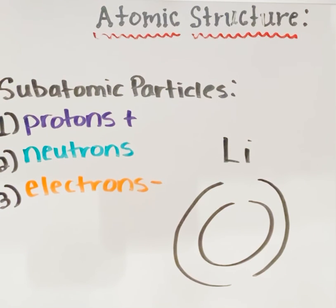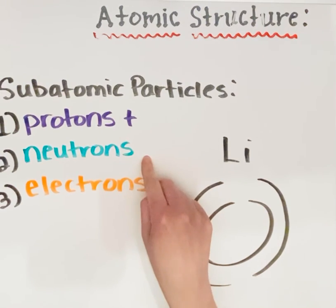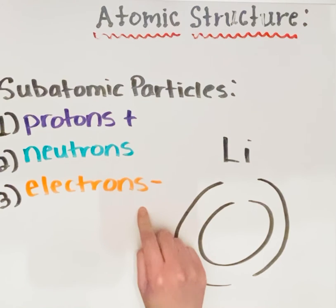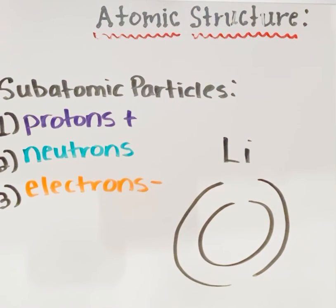We're going to talk about three different types of subatomic particles today, including protons, neutrons, and electrons. Protons, neutrons, and electrons can be distinguished from one another by their location in the atom, the type of charge associated with each one, and also their mass.